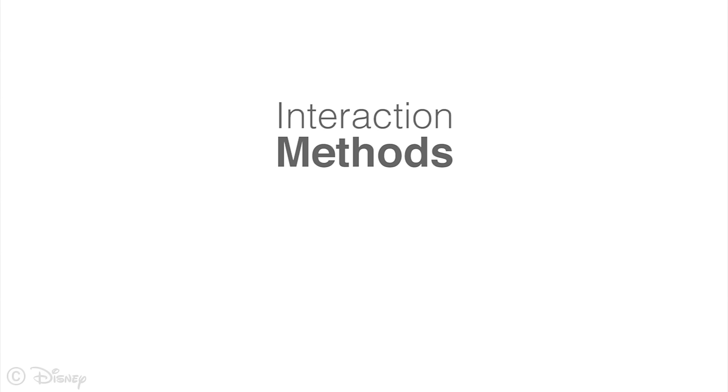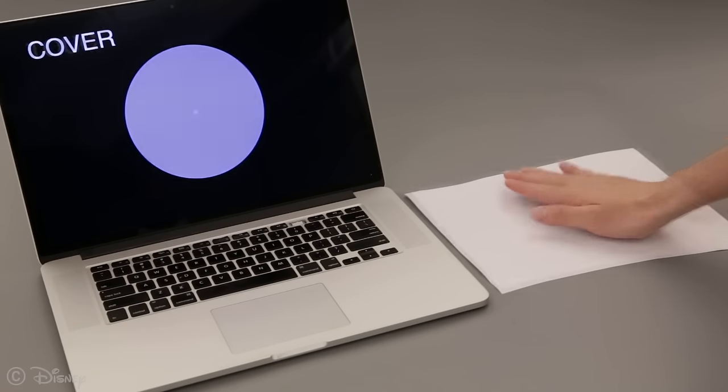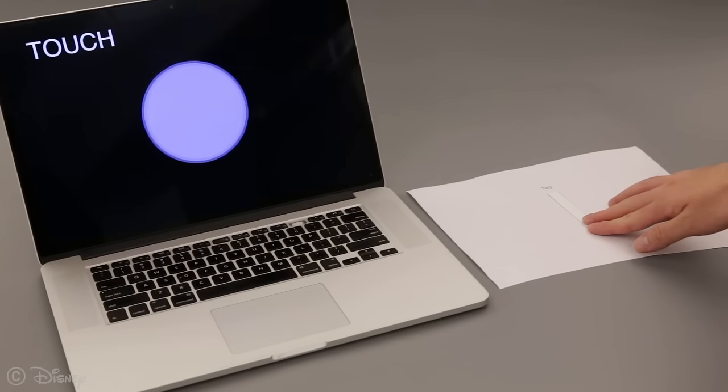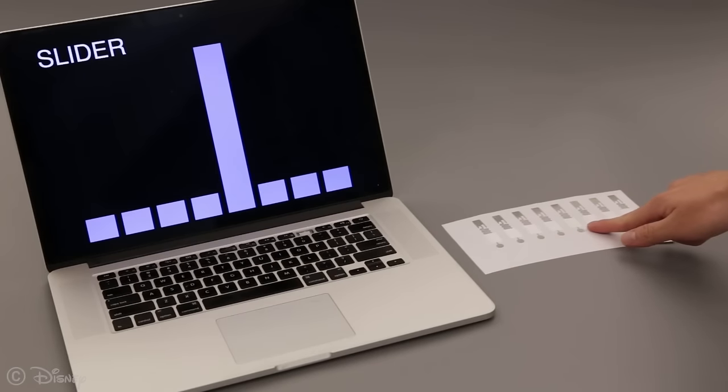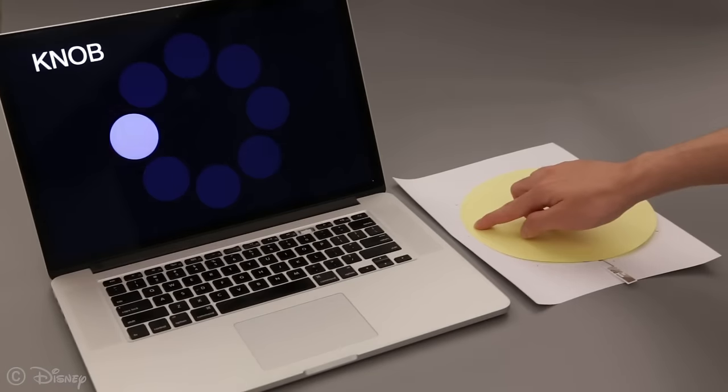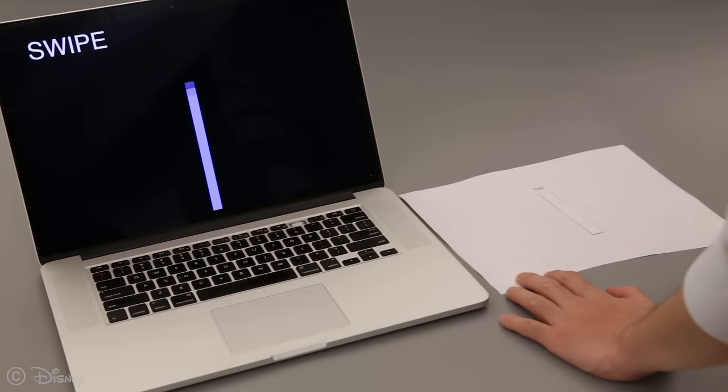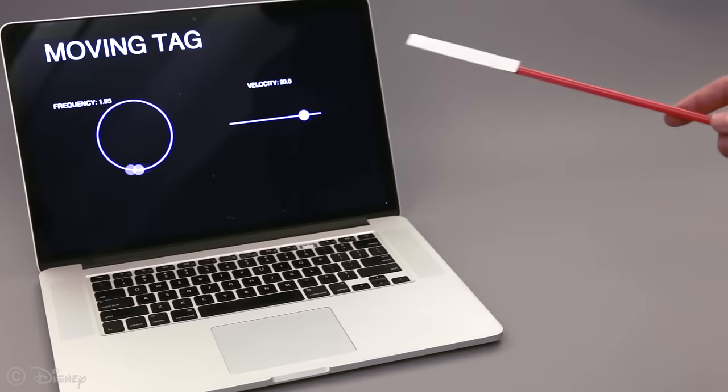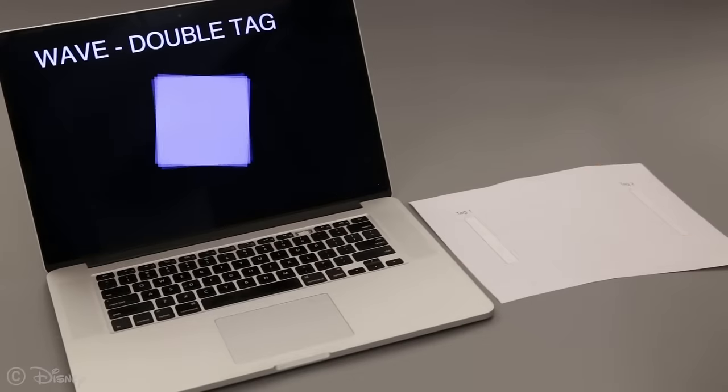We sense seven different basic interaction methods including covering, touching, sliding, turning, swiping, tag movement, and hand waving.